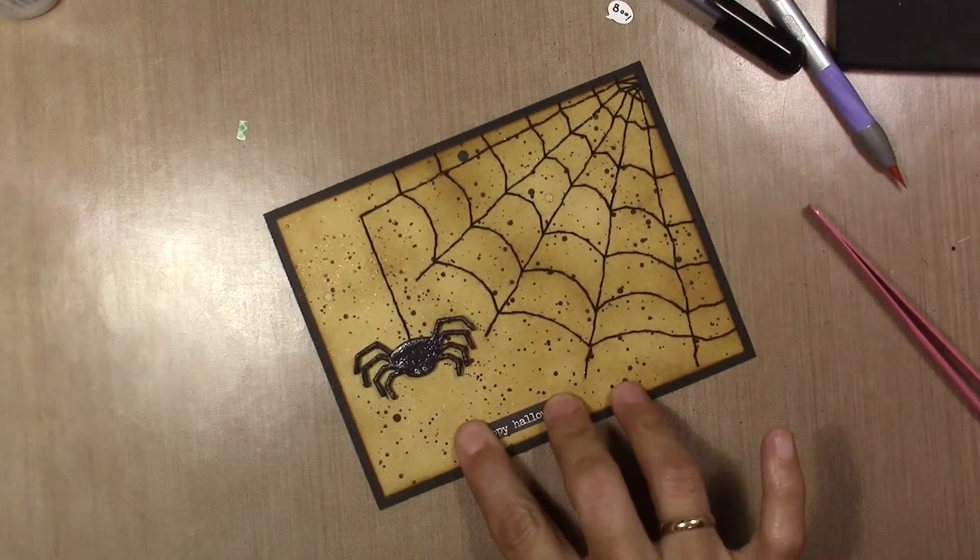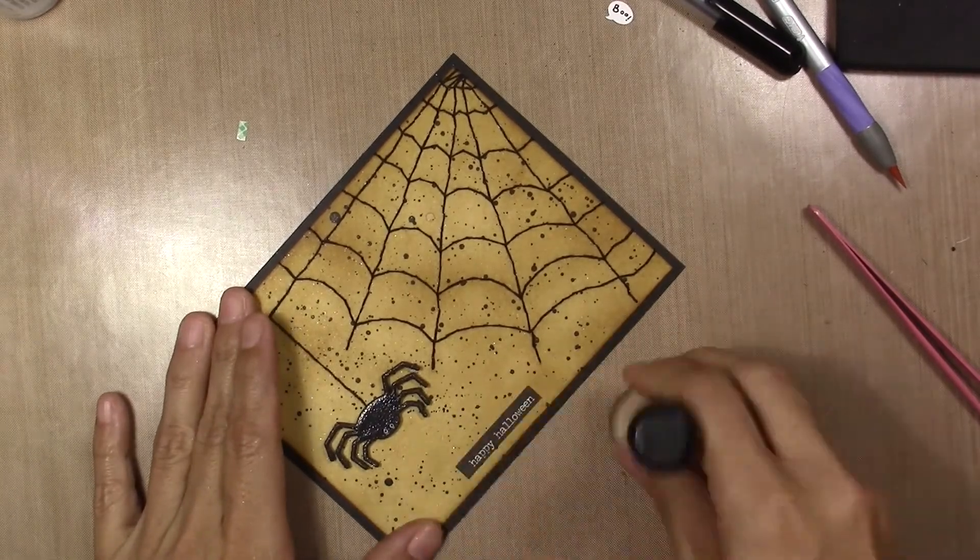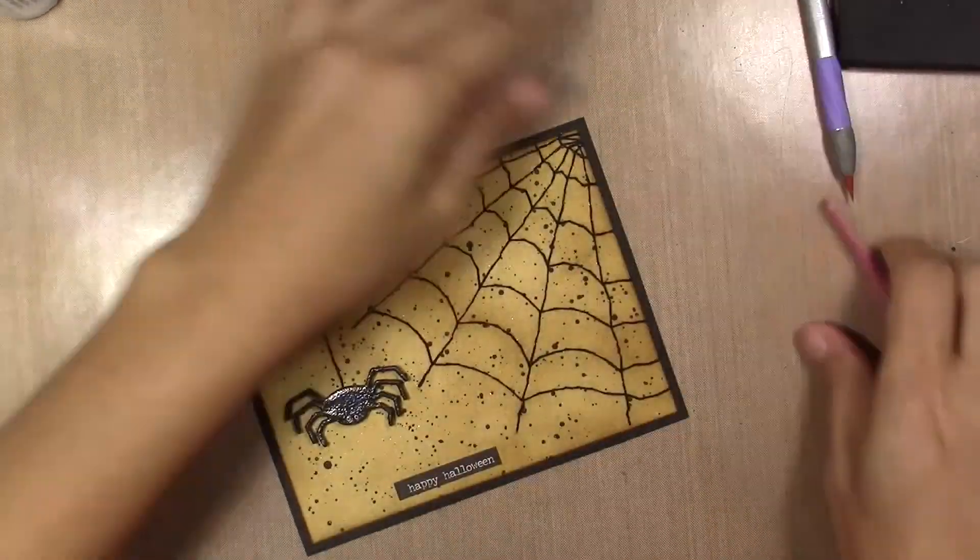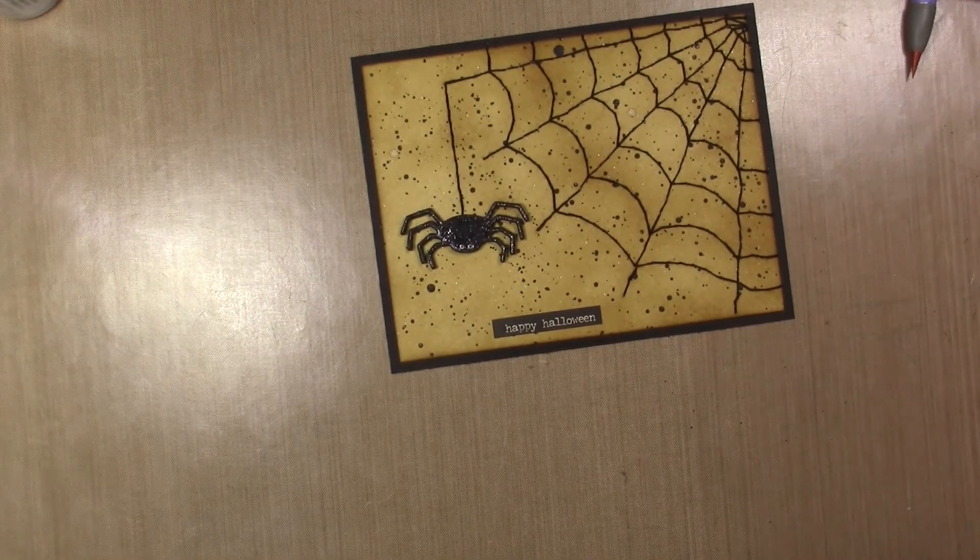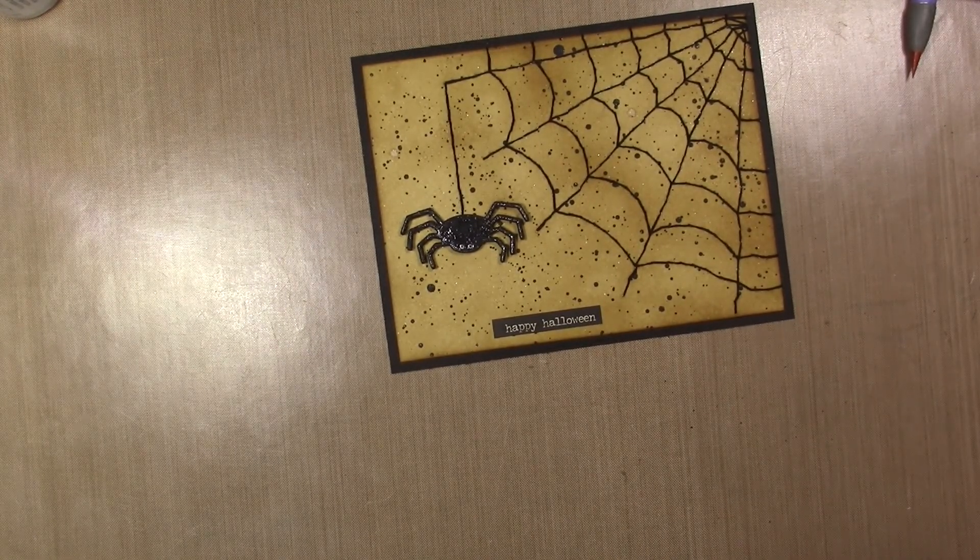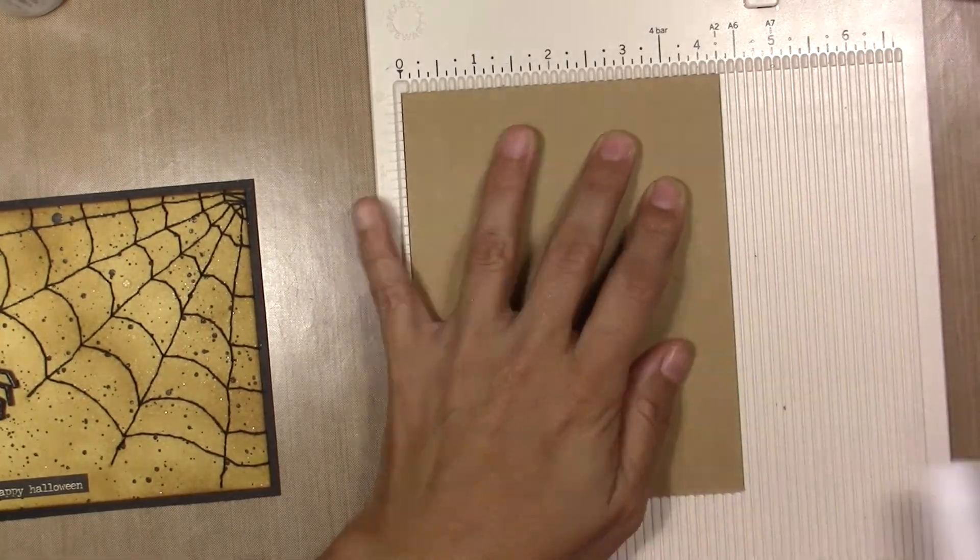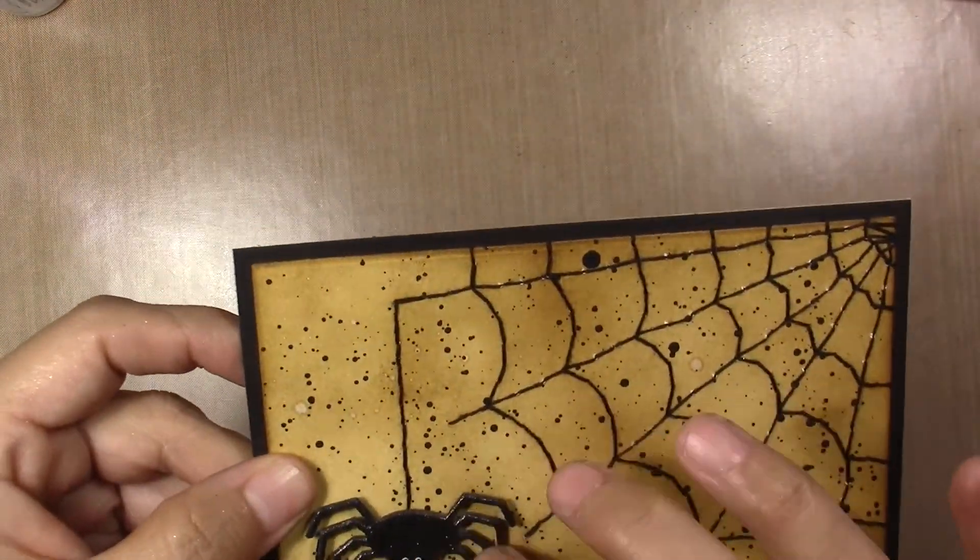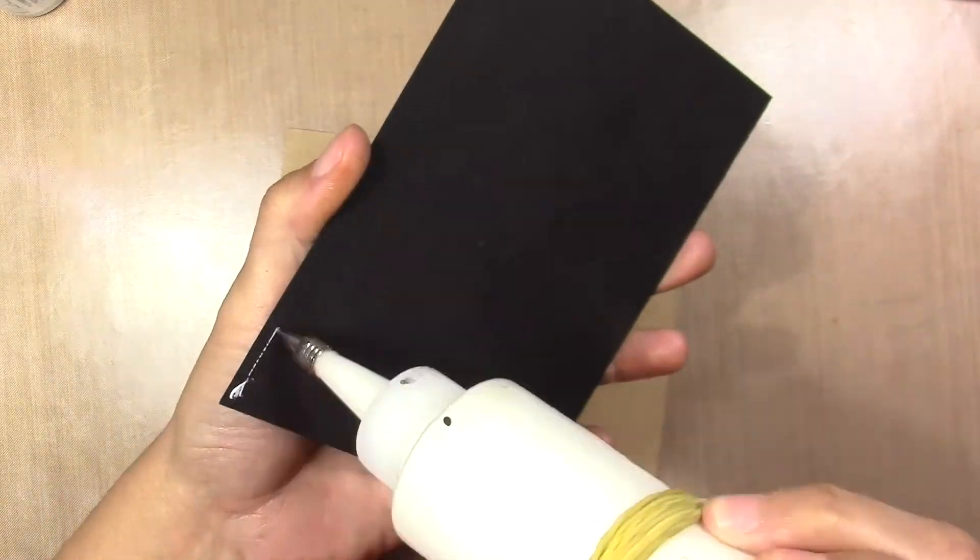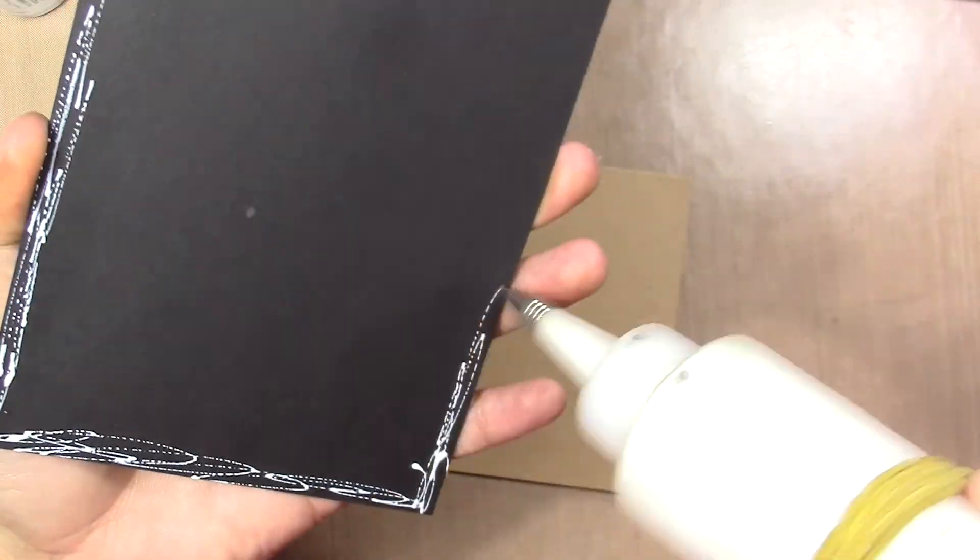Now that I finished doing that, I'm going to glue my spider to my card panel using a foam tape. And I grab a sentiment from Tim Holtz and use my card base. It's going to be made in craft cardstock and I'm going to glue my card panel.